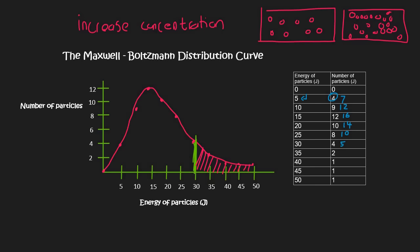What happens is that you are increasing the number of particles. This point, which told us there are 4 particles with an energy of 5, will now have 7 — so this point goes up. All these points are going to go higher up. We're not making them go right or left, because that would be changing the energy; we are making more of them, so we go up. The blue graph will look like that — taller but not shifted sideways. The number of particles able to react has now increased. That is how you handle concentration.